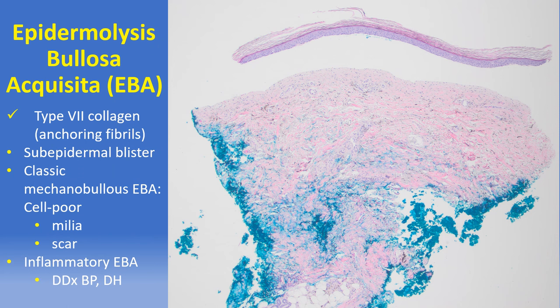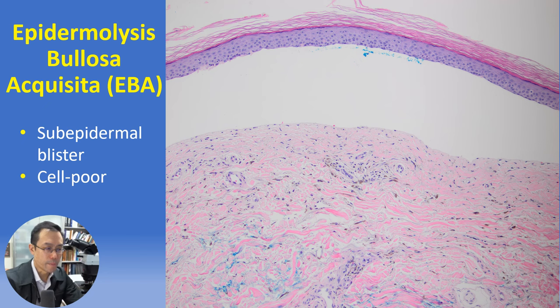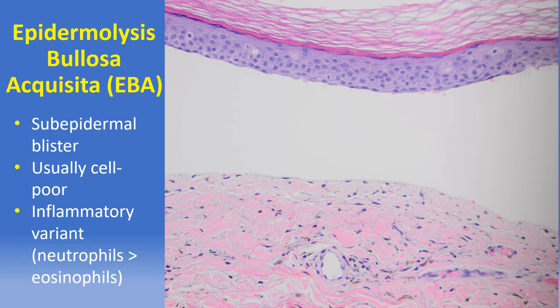Epidermolysis bullosa acquisita (EBA) is a very rare subepidermal immunobullous disorder that nevertheless frequently enters the differential diagnosis with bullous pemphigoid. It's mediated by autoantibodies against type 7 collagen anchoring fibrils in the sub-lamina densa zone and is thus associated with scarring and milia formation. The biopsy shows a subepidermal blister with sparse inflammation, though inflammatory variants of EBA are recognized, highlighting the difficult differential with bullous pemphigoid or cicatricial pemphigoid.